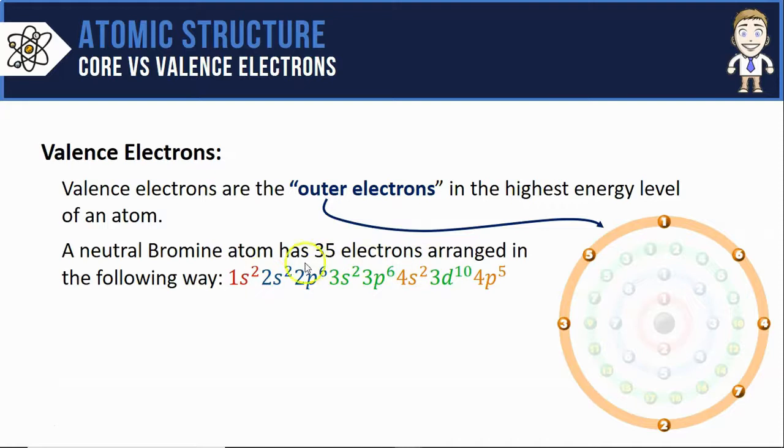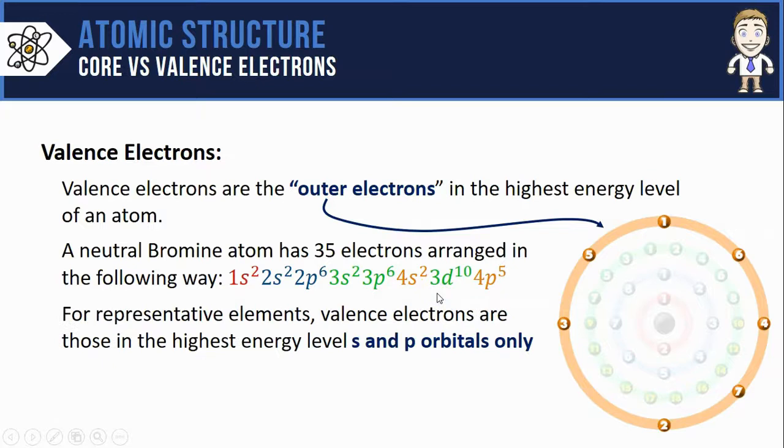To find the valence on a configuration is a little bit trickier because you've got lots of different orbitals to weed through and it doesn't work exactly like you'd think. For the representative elements, the valence electrons are those in the highest energy level, s and p orbitals only. There's two important parts to this description.